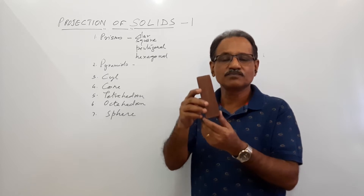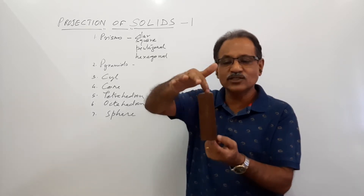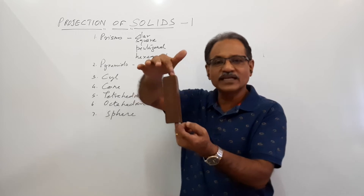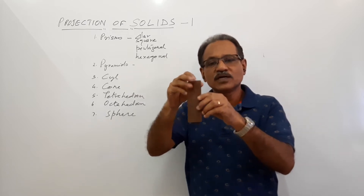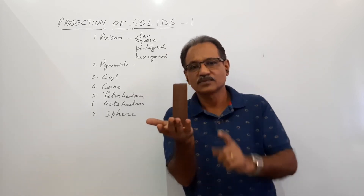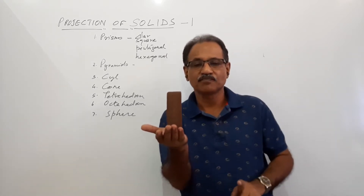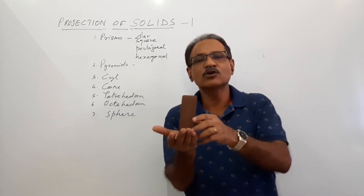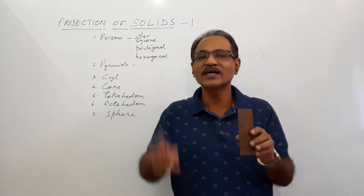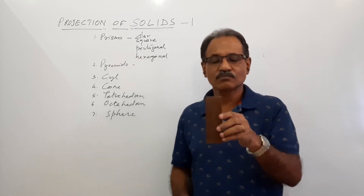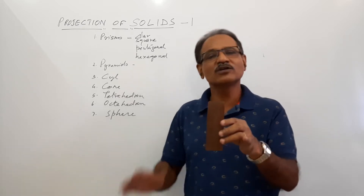If you imagine a line through the solid connecting the geometrical centers of the two triangles, we call it the axis. This equilateral triangular prism has the axis perpendicular to the base — therefore we call it a right prism. If the axis is inclined to the base, we call it an oblique prism. We usually do not draw oblique prisms. So we draw only regular right prisms and pyramids. We can say: right, regular, triangular prism.